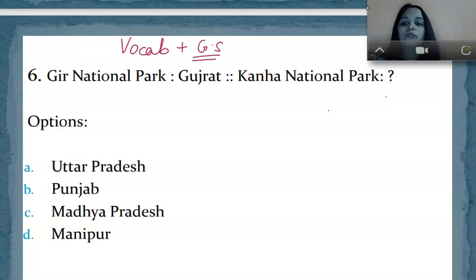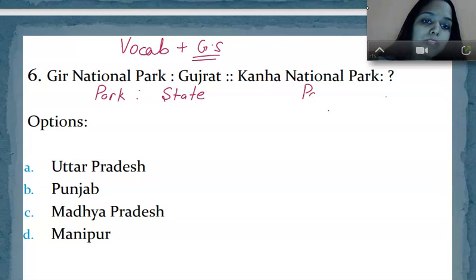Now come to the question. Question number one of the day, or you can say question number six of word analogy. Gir National Park is related to Gujarat in the same way Kanha National Park is related to which one? Park and state are related in the same way, park and state are related. So Kanha National Park is in Madhya Pradesh.